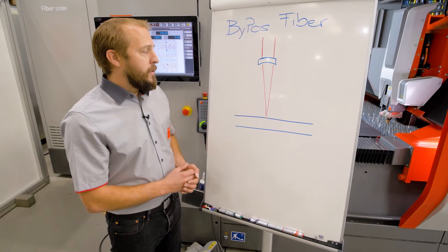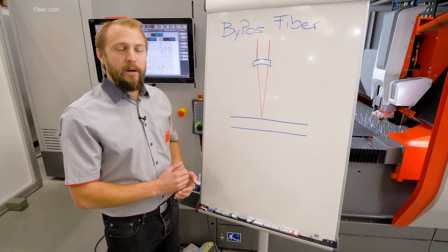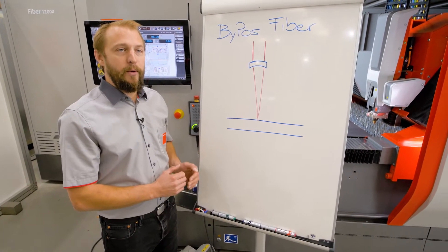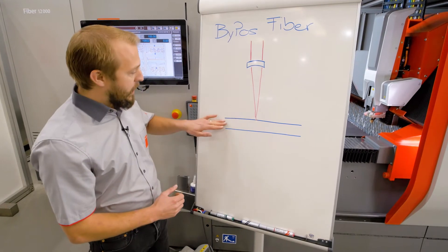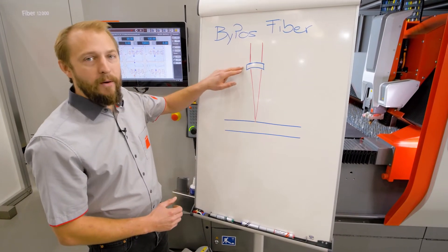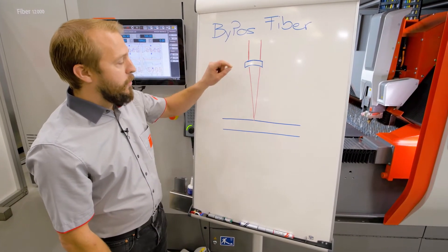Bypass fiber is changing our focal point to a different position. So here we have our material, here we have our lens and here our beam.